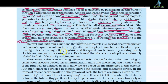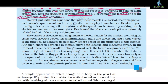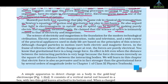Maxwell put forth four equations that play the same role in classical electromagnetism as Newton's equations of motion and the law of gravitation play in mechanics. He also argued that light is electromagnetic in nature and its speed can be found by making purely electric and magnetic measurements. He claimed that the science of optics is intimately related to electricity as well as magnetism. The science of electricity and magnetism is the foundation for modern technological civilization — electric power, telecommunication, radio, television, and a wide variety of practical appliances used in daily life are based on the principles of this science.